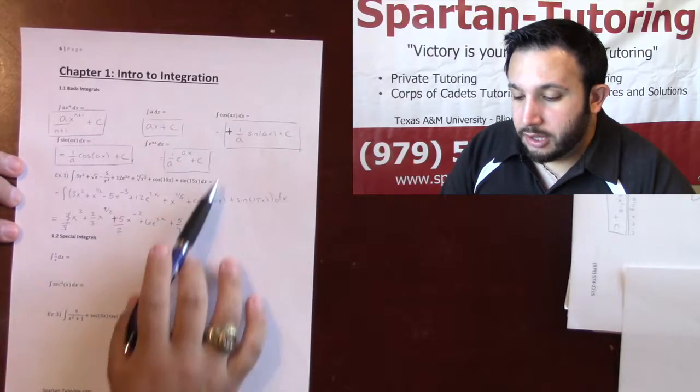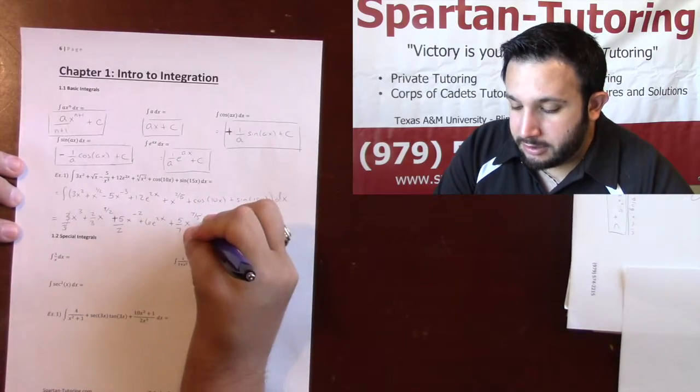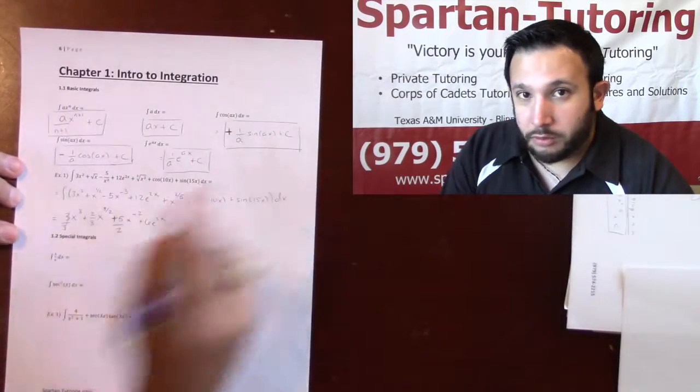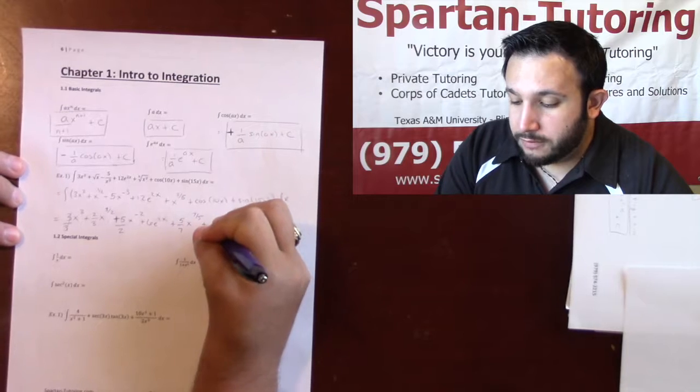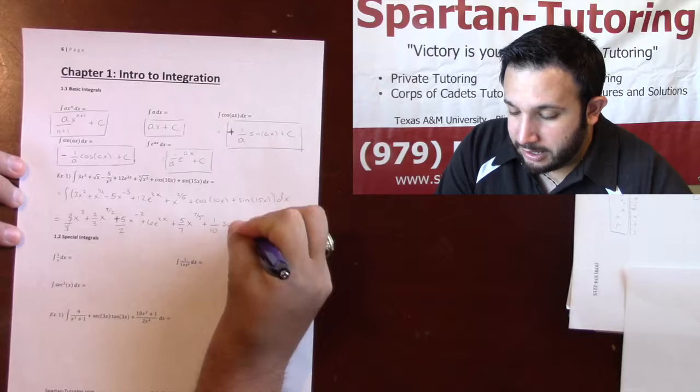And then finally with the cosine, notice how the integral of cosine will be a positive sine, but because I have a number on the inside, instead of multiplying by that number like we did with derivatives, we're going to divide by that number. So it'll be 1 over 10 sine of 10x.